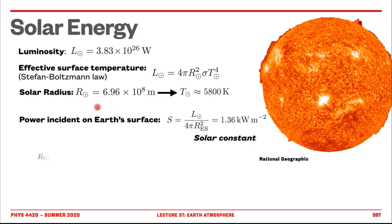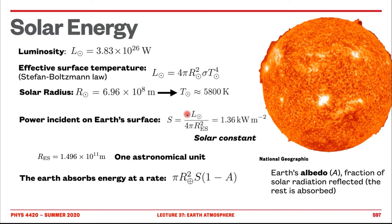An important concept not yet introduced is the albedo number, which basically says what fraction of the energy that hits the Earth is actually absorbed. Some of it is reflected, and the portion that's reflected is related to the albedo term. Only the rest — one minus a — is absorbed by the Earth. We need to use the cross-sectional area pi R^2, thinking about the projected surface area of the Earth that actually sees the Sun at any given time. These are elementary geometrical constructions.